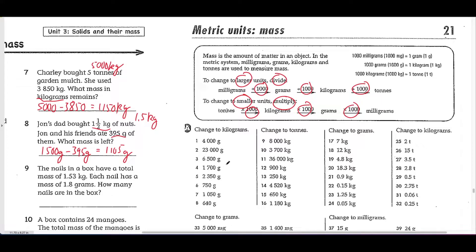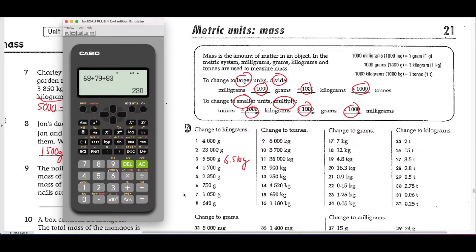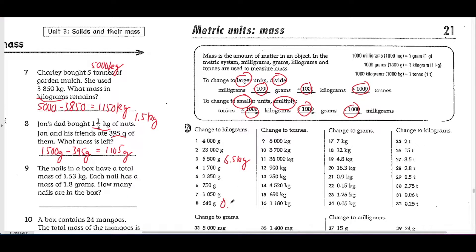Let's look at a few conversion questions. To convert grams to kilograms you're going to a bigger unit, so divide by 1,000. For example: 6,500 grams divided by 1,000 equals 6.5 kilograms. If you're not sure, use your calculator. To convert 640 grams to kilograms: divide by 1,000 to get 0.64 kilograms. Make sure you write the units — 0.64 kilograms.